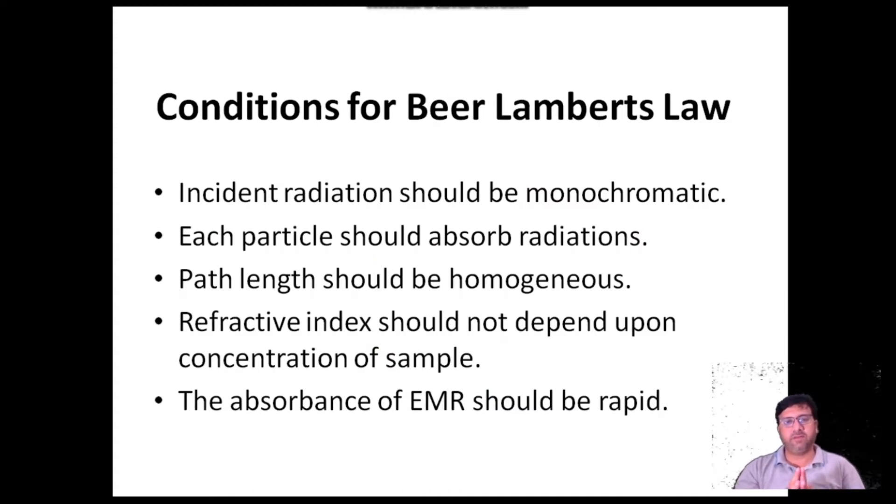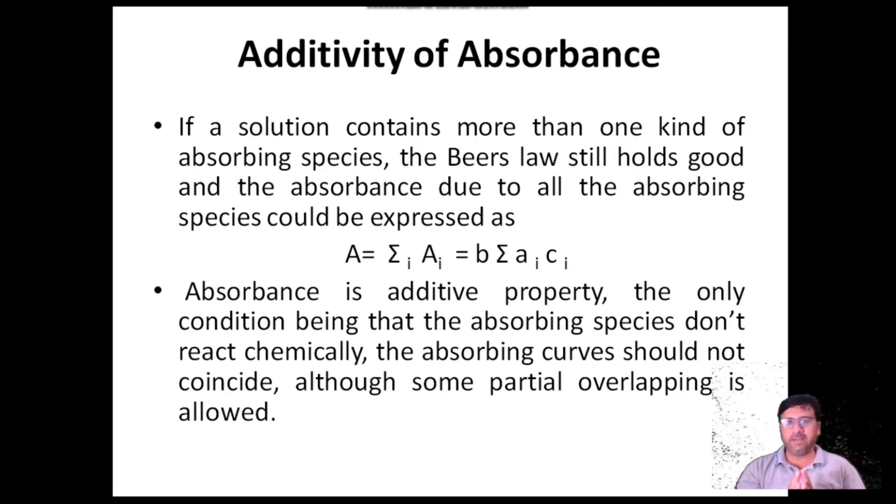Conditions for Beer-Lambert law: Number one, incident radiation should be monochromatic. Each particle should absorb radiation. Path length should be homogeneous. Refractive index should not depend upon concentration of sample. The absorbance of electromagnetic radiation should be rapid. Absorbance is additive.